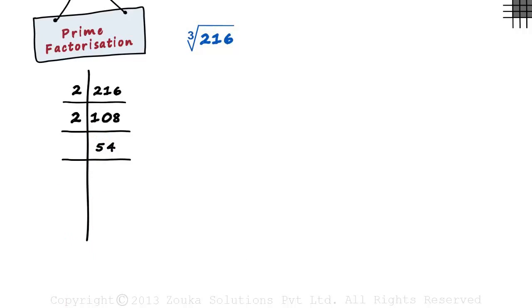Again, since 2 is a factor of 54, we write 2 here and write 27 here as 2 multiplied by 27 equals 54.